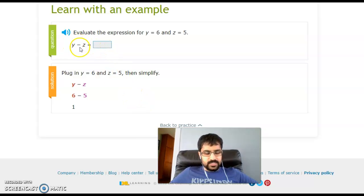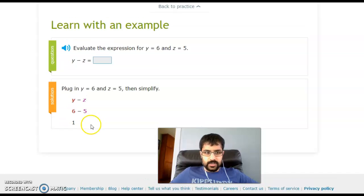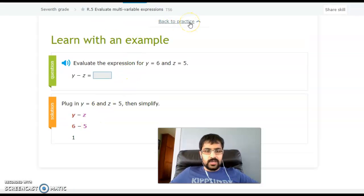So here in this example, I've got the variable y, and then subtracted from that is the variable z. According to the example, it tells me y is equal to 6, so I plug in 6 for y right here, and then it tells me that z is equal to 5, so I plug in 5 for z right here. Since they're being subtracted, I can take 6 minus 5, and my answer is 1, and it's as simple as that.